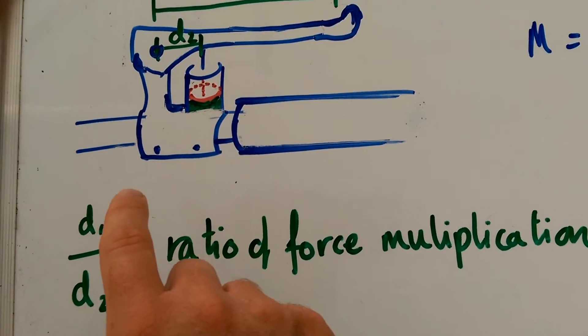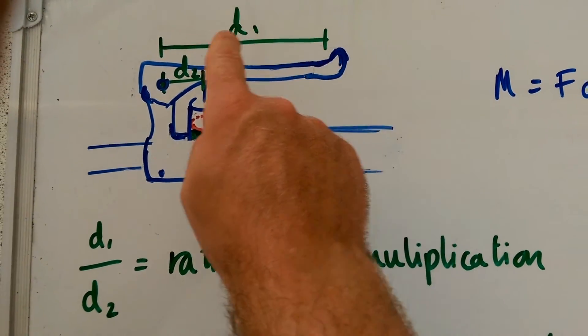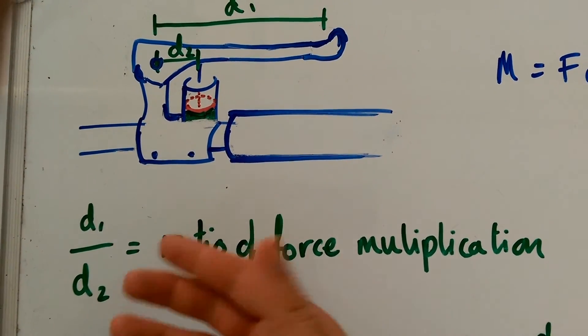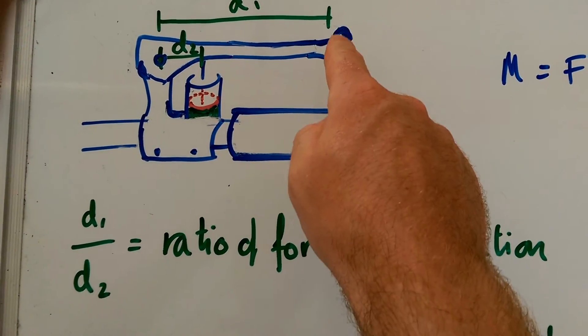So if that ratio was, if this length was twice this length, then the ratio would be two. The force here would be twice the force here.